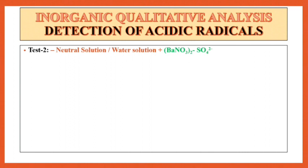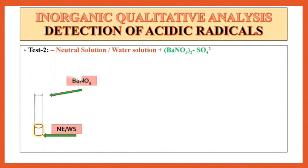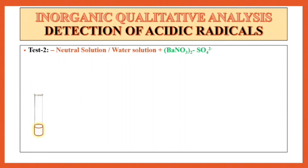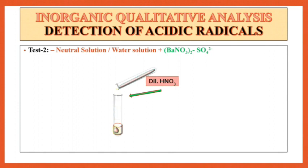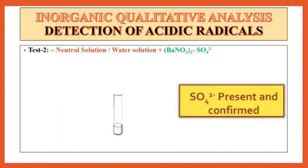Let us see test 2. It is for the detection of SO4²⁻ radical. For that, take neutral extract or water solution. To this solution, add Ba(NO3)2 drop wise and shake it well. If a white PPT is observed, then add dilute HNO3 drop wise and shake it well. It is insoluble. So SO4²⁻ is present and confirmed.